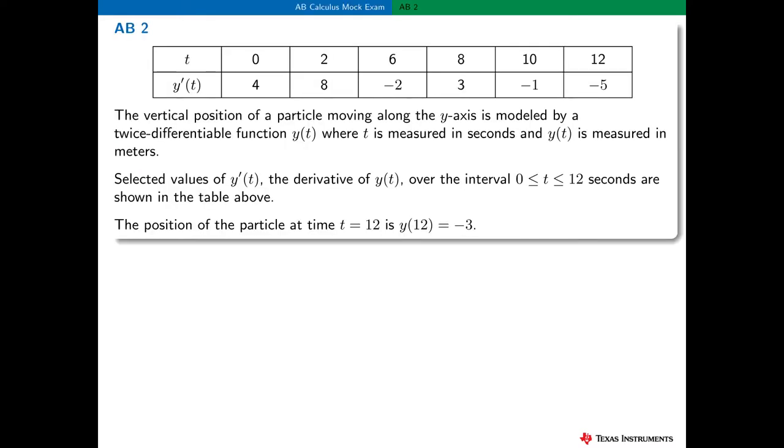Form AB, Question 2 involves a particle moving along the y-axis. Its position is modeled by a twice-differentiable function y(t), where t is measured in seconds and y(t) is measured in meters. We're given a table of values of y'(t) for selected values of t, and we also know that the position of the particle at time t = 12 is -3.